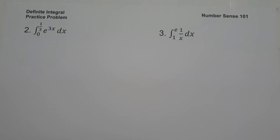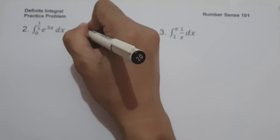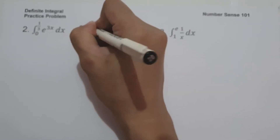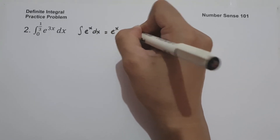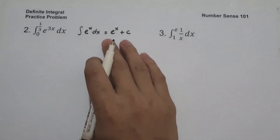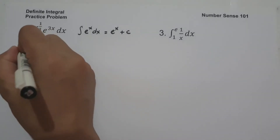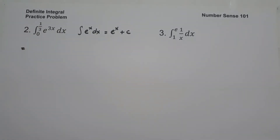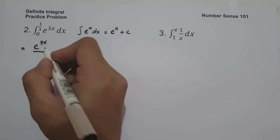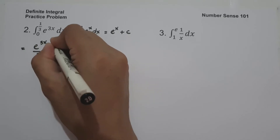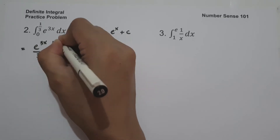On example number 2, what is the antiderivative of e raised to 3x dx evaluated from 0 to 1/3? Using the formula that the antiderivative of e raised to x is e raised to x plus c, the antiderivative of e raised to 3x is e raised to 3x over the derivative of 3x, which is 3, evaluated from 0 to 1/3.